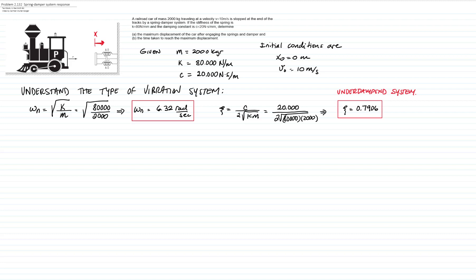Since the damping ratio is less than 1, this is an underdamped system, meaning it will oscillate at the damped frequency. Let's calculate the damped frequency: ωd = ωn × √(1 − ζ²). That will be 6.32 × √(1 − 0.7906²), giving a damped frequency of 3.87 radians per second.